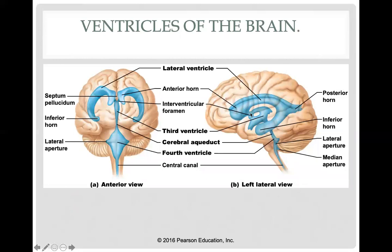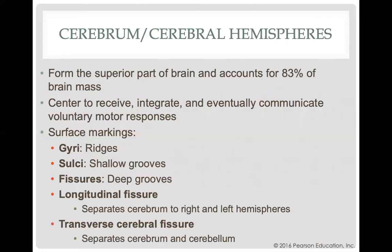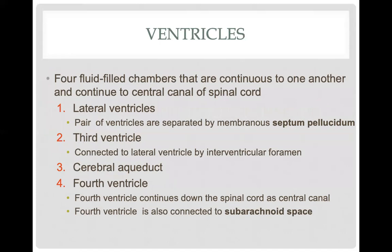Going down from the third ventricle, the fluid gets picked up by a tube-like structure called the cerebral aqueduct, visible in the lateral view. The cerebral aqueduct ends with a structure connected to the cerebellum and brain stem known as the fourth ventricle. The fourth ventricle continues down the spinal cord through the central canal. The ventricles are connected to the subarachnoid space through the fourth ventricle.